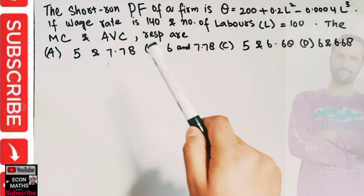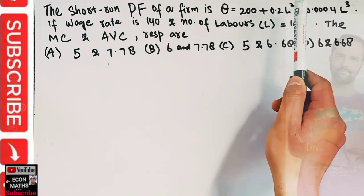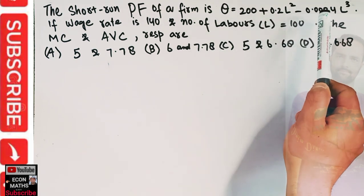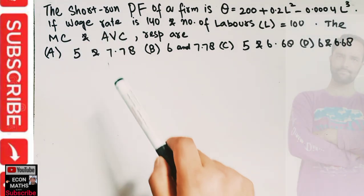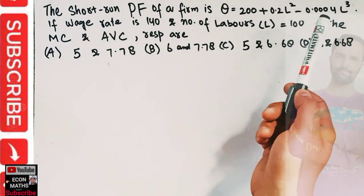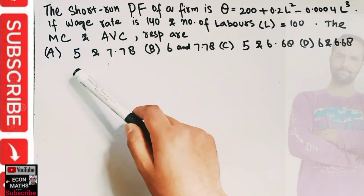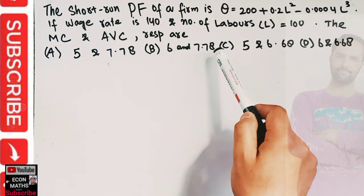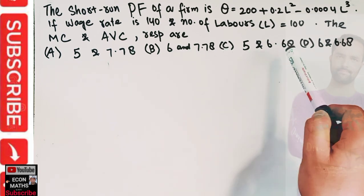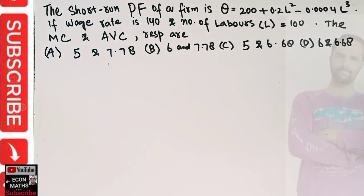The next question: the short-run production function of a firm is q = 200 + 0.2L² minus 0.004L³. If the wage rate is 140 and the number of laborers is 100, the marginal and average variable costs respectively are — options given are: 5 and 7.78, 6 and 7.78, 5 and 6.78, and 6 and 6.68. Let's try to solve this question.